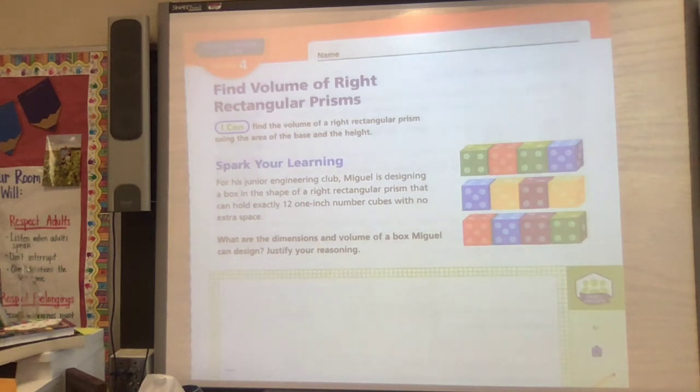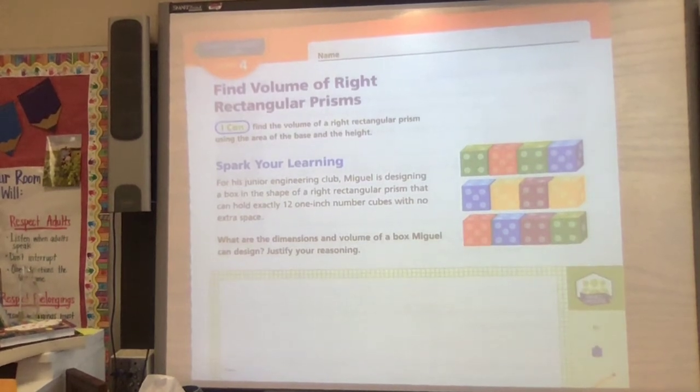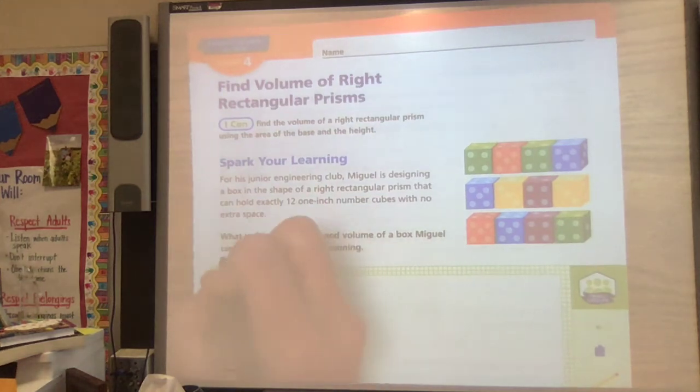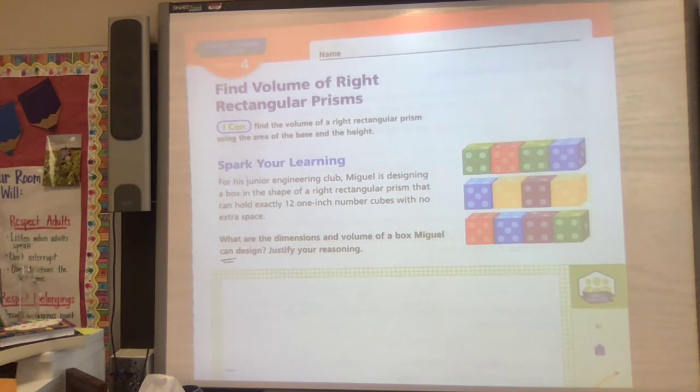It says for his junior engineering club Miguel is designing a box in the shape of a right rectangular prism that can hold exactly 12 one-inch number cubes with no extra space. What are the dimensions and volume of a box Miguel can design? And just like we've done this a few times, there's more than one answer for this.